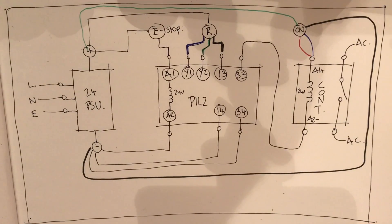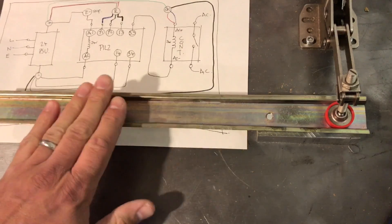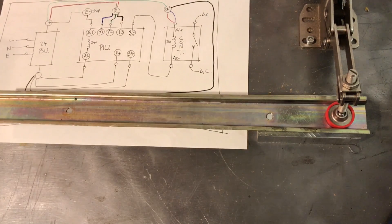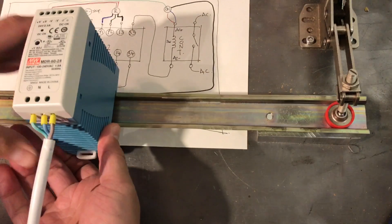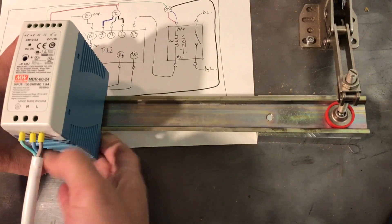We've got a bit of DIN rail here. We'll start off by mounting the 24 volt power supply on it.